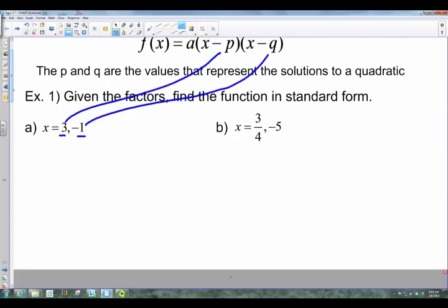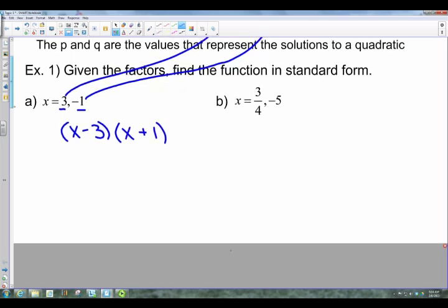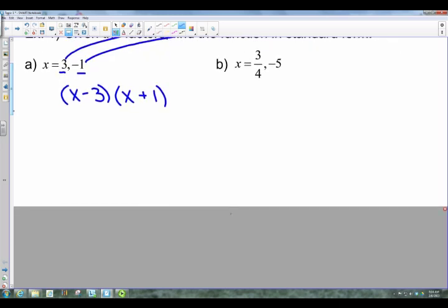So the biggest key here is you're going to take each of these and substitute them in for p and q. When you do that, you end up with, in this first one, x minus 3, and for that second one, x minus the negative 1. When you have that minus and negative, because of multiplication, that becomes x plus 1. So there is your actual function.